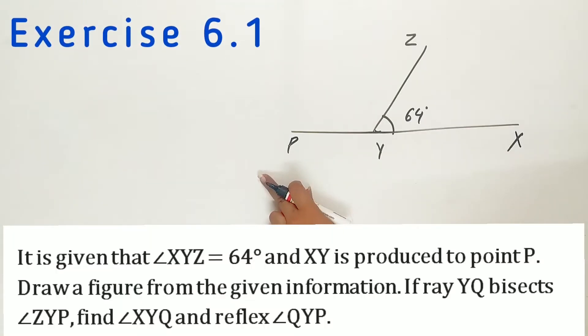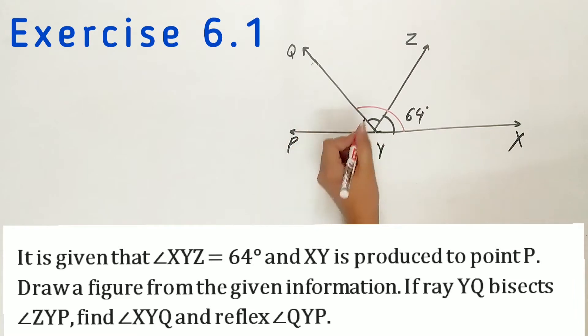X, Y is reduced to point P. If ray YQ bisects angle ZYP, find angle XYQ and reflex of angle QYP.